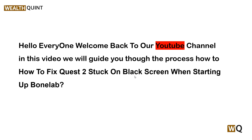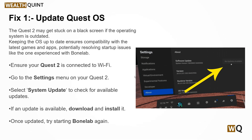The first step is to update the Quest 2 operating system. The Quest 2 may get stuck on a black screen if the operating system is outdated. Keeping it up to date ensures compatibility with the latest games and apps, potentially resolving startup issues like the one experienced with BoneLab. Ensure your Quest 2 is connected to Wi-Fi, go to the Settings menu, select System, then Update to check for available updates. If an update is available, download and install it.